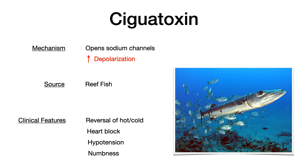The next toxin is ciguatoxin, which kind of does the opposite of tetrodotoxin. In tetrodotoxin we saw decreased depolarization; in ciguatoxin we see increased depolarization of action potentials. This is due to opening of sodium channels. So they're very much like opposites if you want to think about it simply.